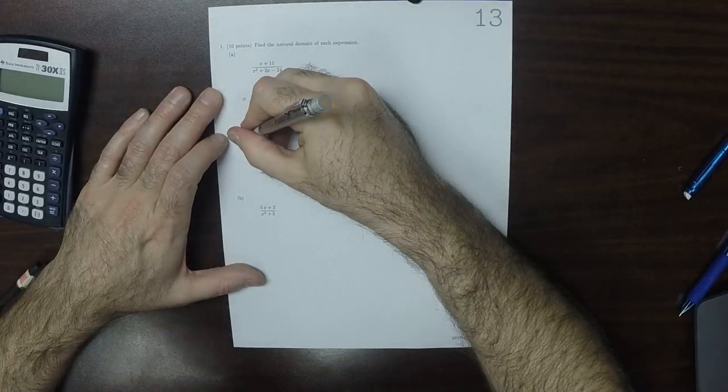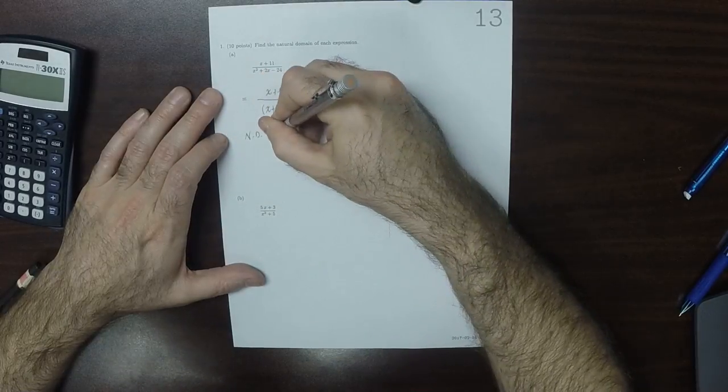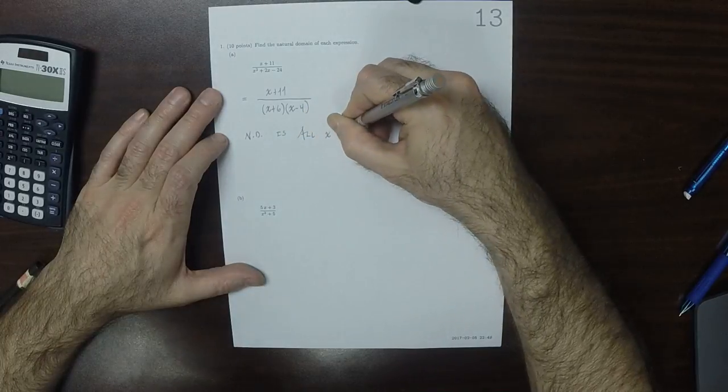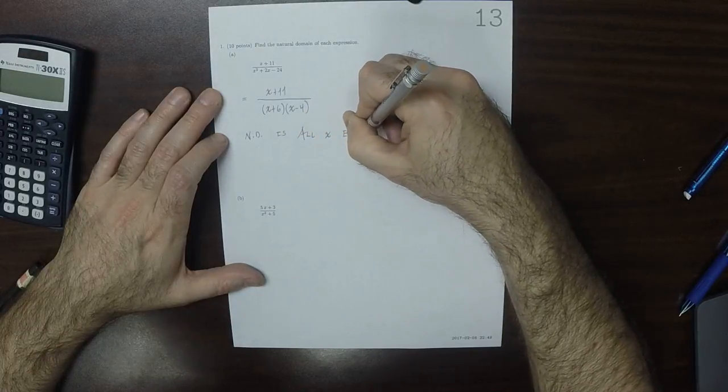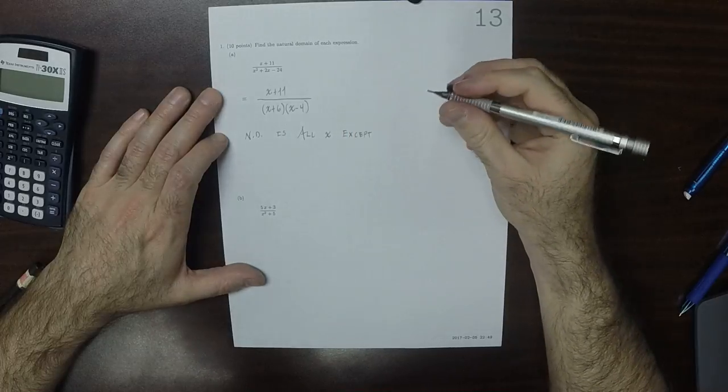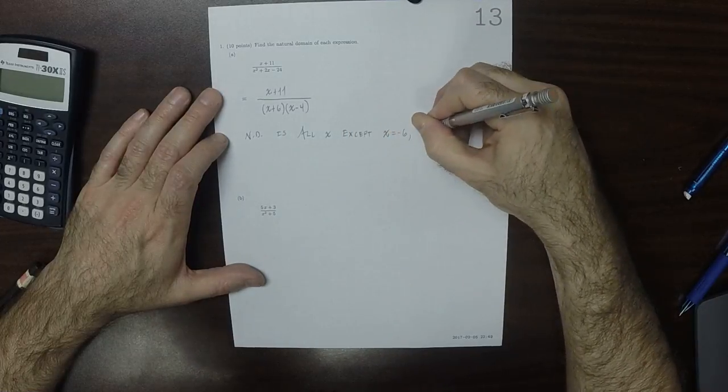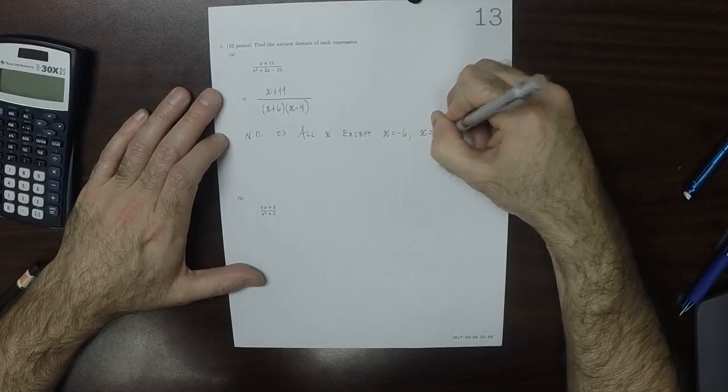So now that it's factored, you can see that the natural domain is all x, except x is negative 6, x is 4.